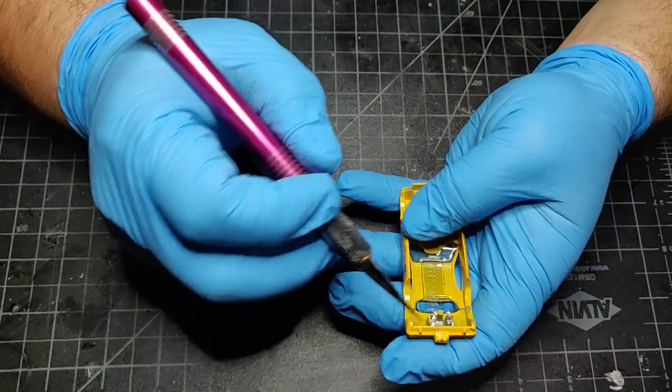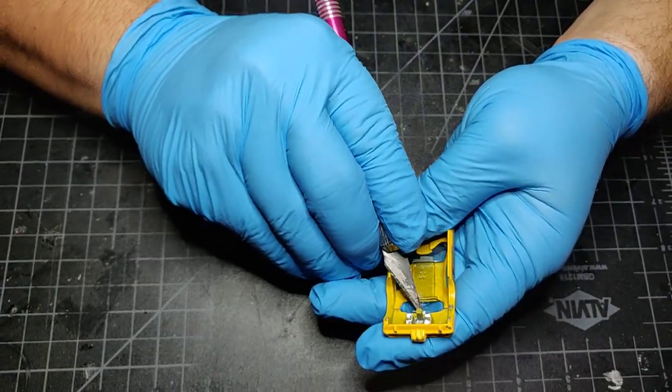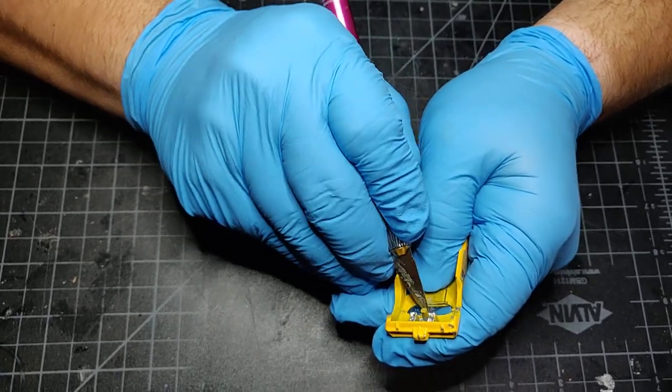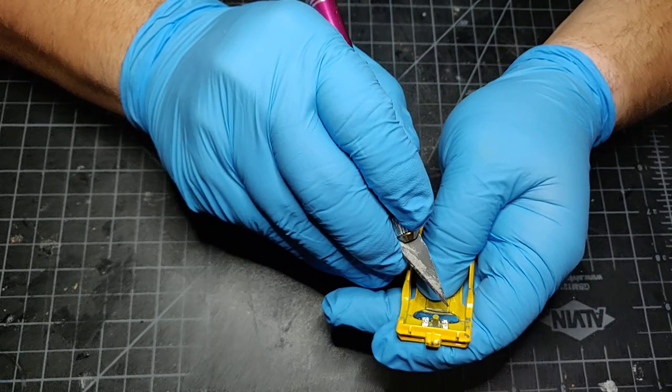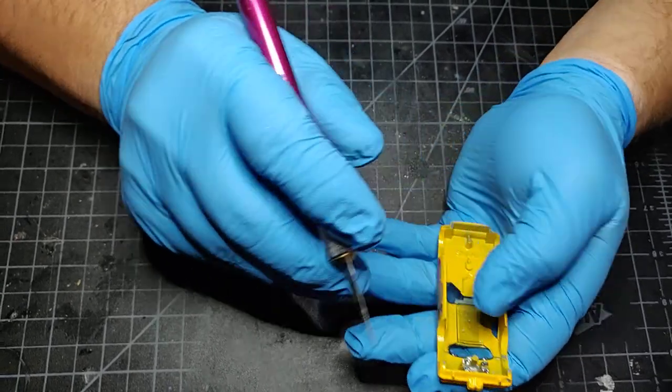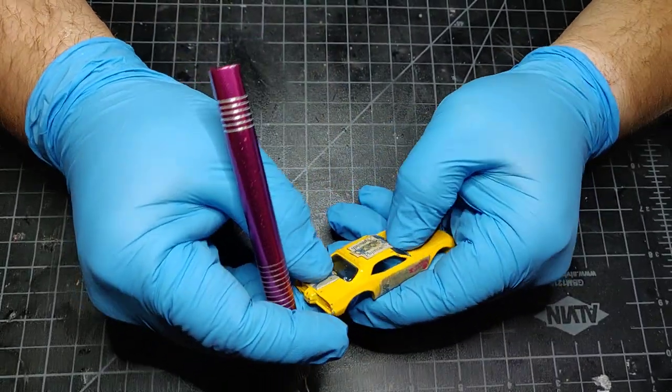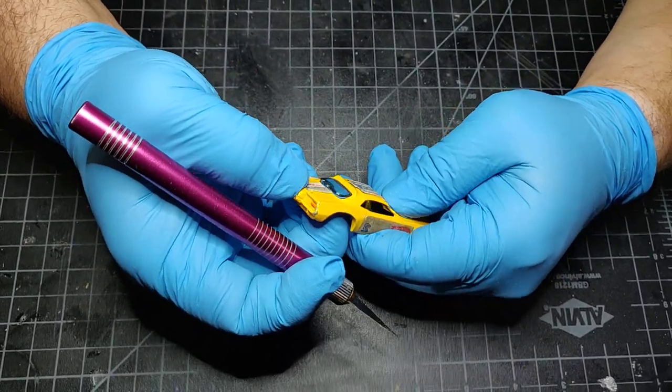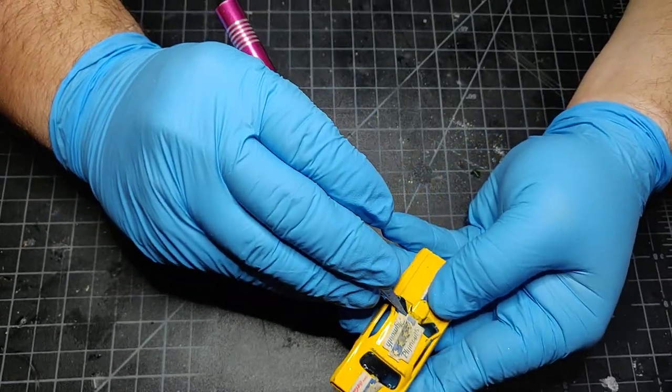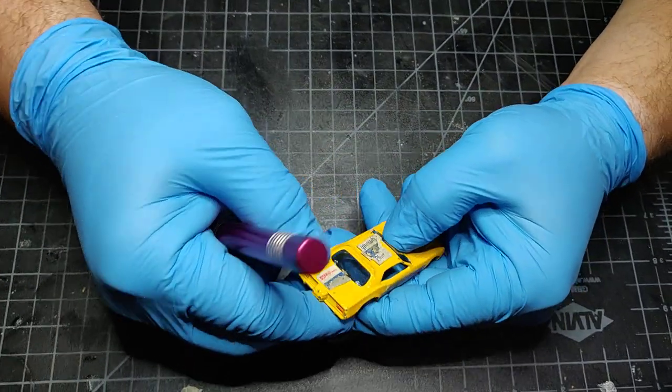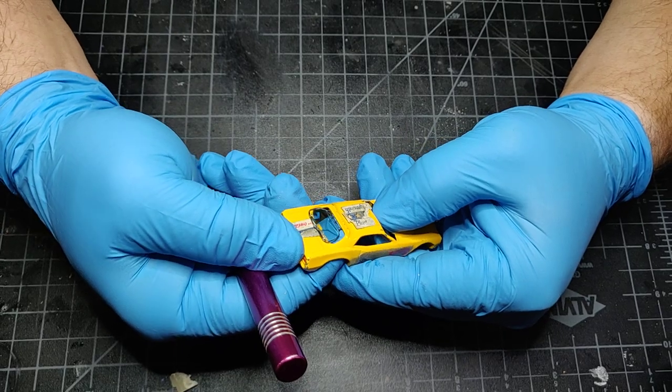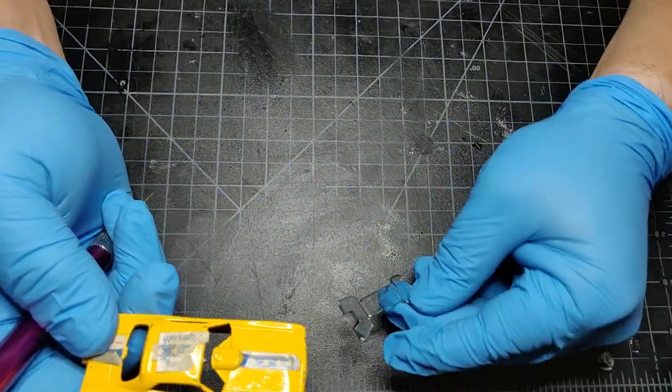So basically what you're doing here is making this a little bit flexible so you can bend it a little bit. Let's try it now, see. You can see it's lifting. It's alright, and it comes out.